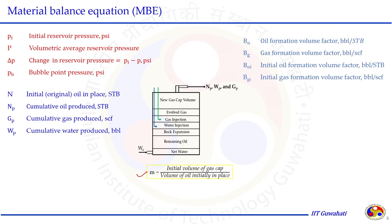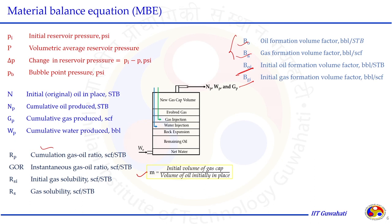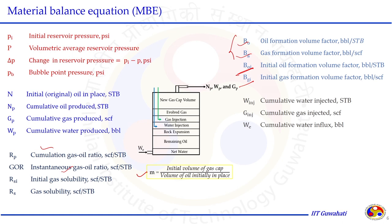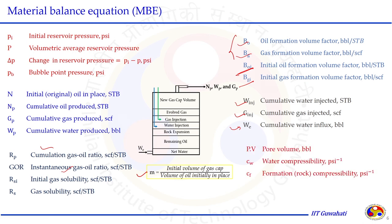To relate reservoir conditions to standard conditions we need formation volume factors: BO and BG at any time of investigation, and BOI and BGI at initial conditions. The relationship between oil and gas includes cumulative gas-oil ratio Rp, instantaneous GOR, initial gas solubility RSI, and gas solubility RS at any time. On the external injection side: water injection WINJ, gas injection GINJ, and water influx We from a nearby aquifer. Rock pore volume and compressibilities CF and CW must also be known.